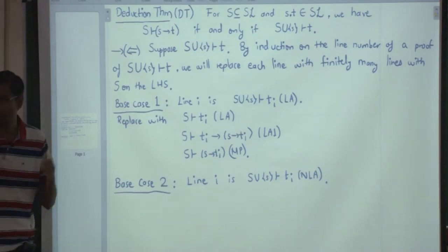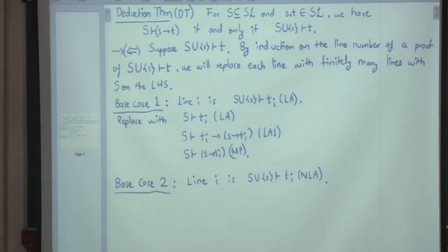So suppose you have a proof of T from S union singleton s. Now that proof is a finite length proof. For that finite length proof, for each line, we are going to replace that line inductively, of course,